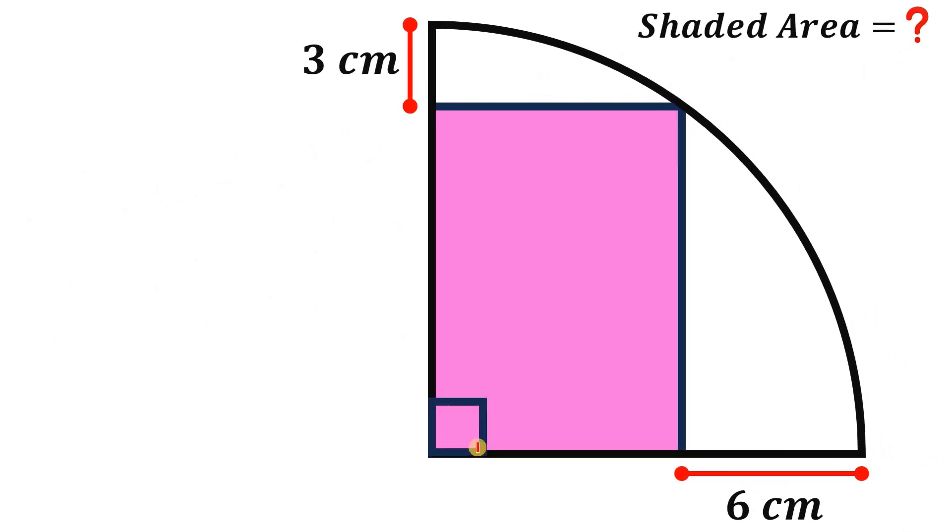So given this figure, our goal is to find the area of this rectangle. Now, to answer this question, what we're going to do is to draw first the radius of this quarter circle at this point of intersection of the rectangle and the quarter circle like this. And we know since it is a radius, let's call this as R. And now, the whole thing is the radius of our quarter circle.